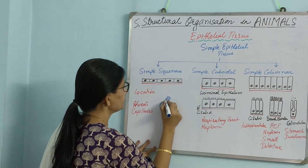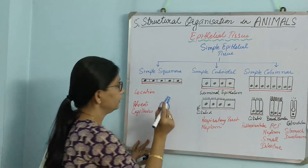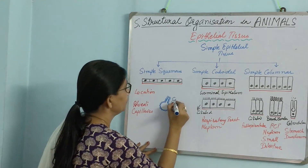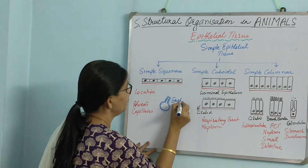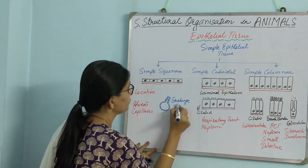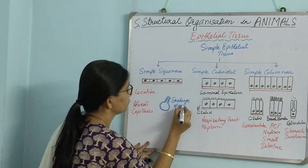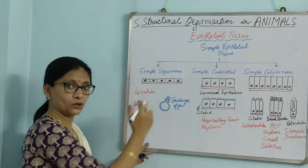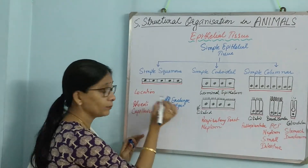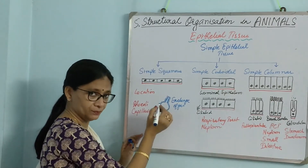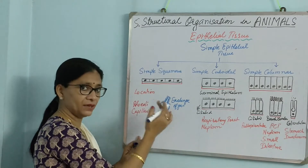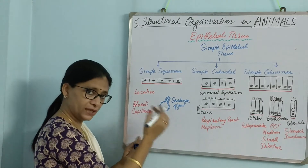The purpose is exchange of gas — carbon dioxide and oxygen. Exchange is taking place here, and it is surrounded by capillaries. So if this wall is thick, then the exchange will not be able to take place.